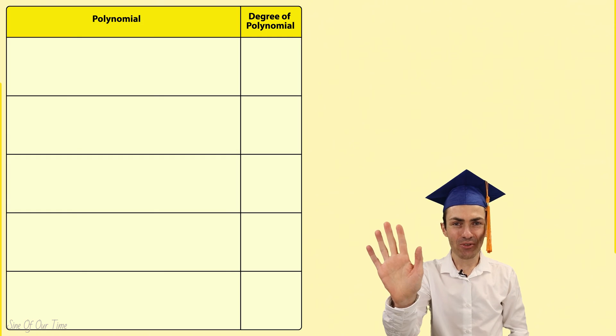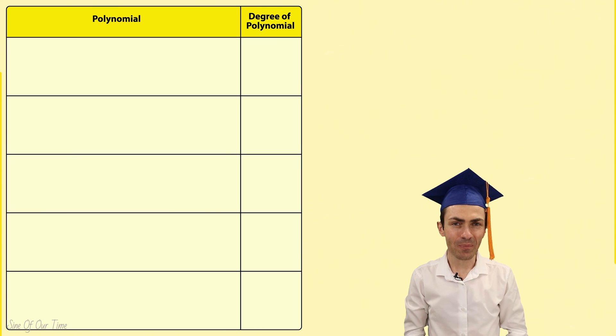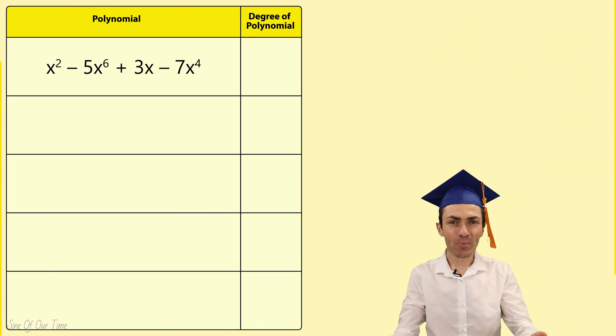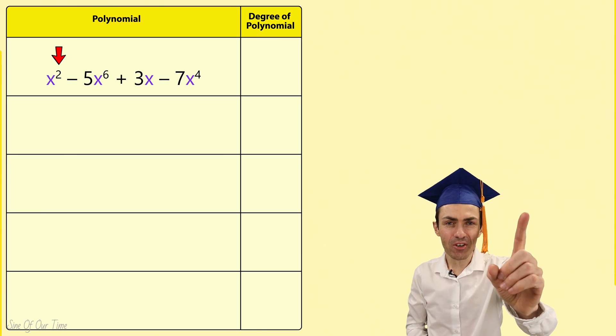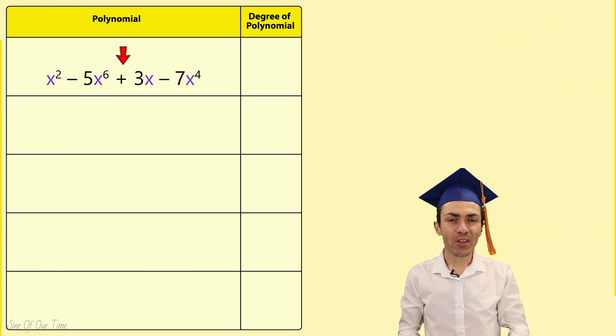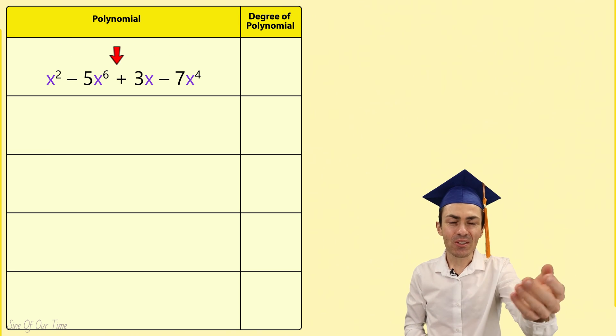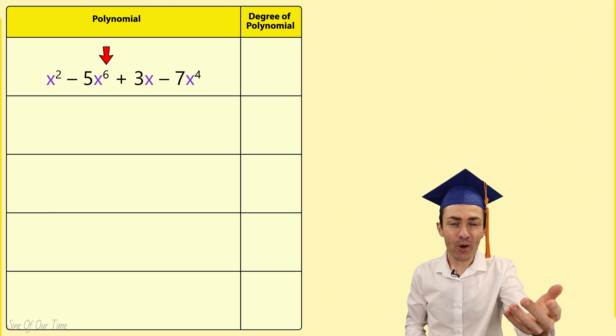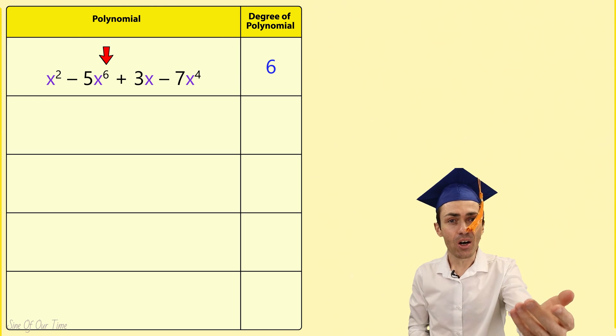Let's consider five different examples starting with this one. If each term in a polynomial only has one variable, we look for the variable that has the highest exponent. Whatever the value of that exponent is, is the degree of the polynomial.